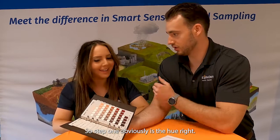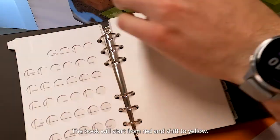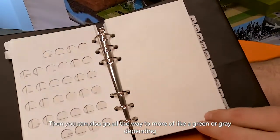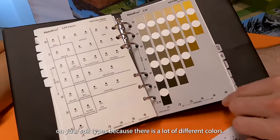So step one obviously is the hue. We want to know what is the color of that soil. The book will start from red and shift to yellow, then you can also go all the way to more of a green or grey when you have a soil type, because there's a lot of different colors.